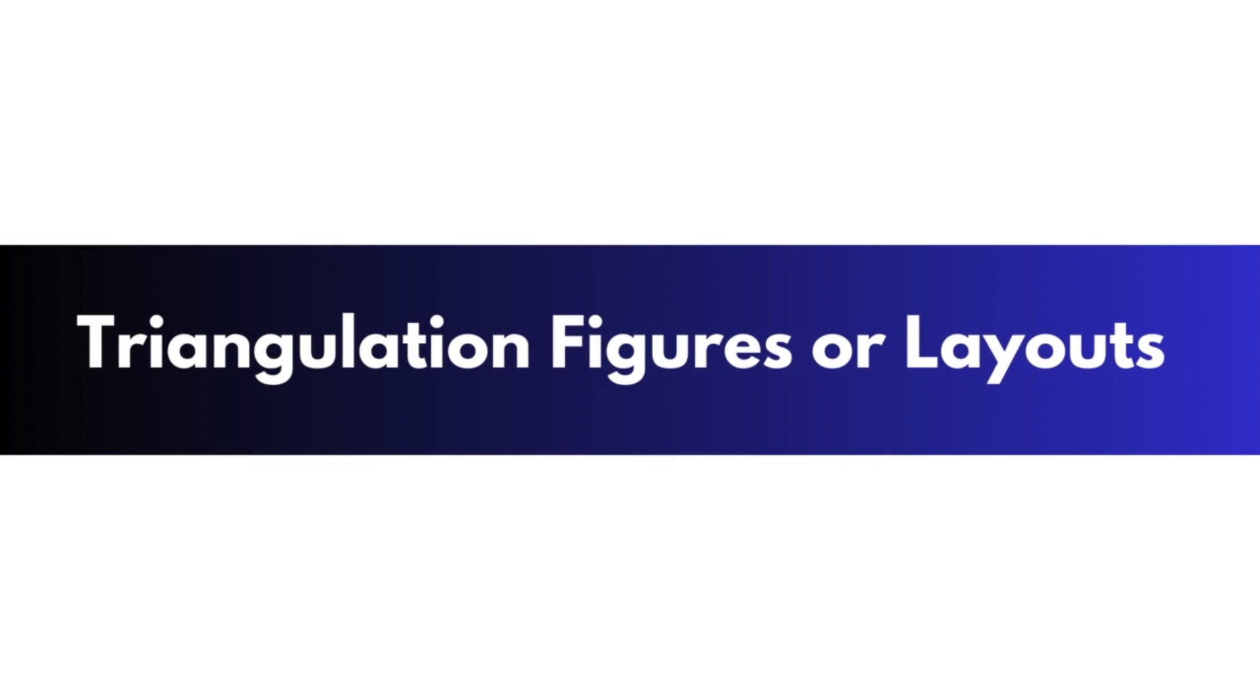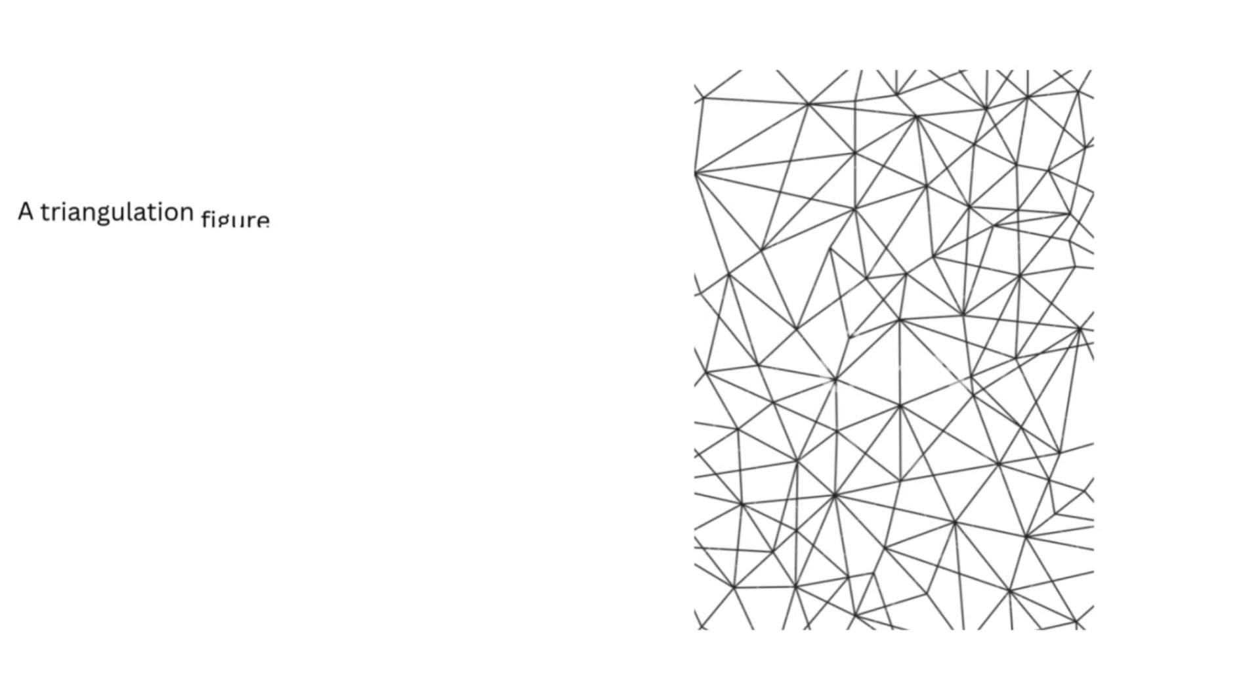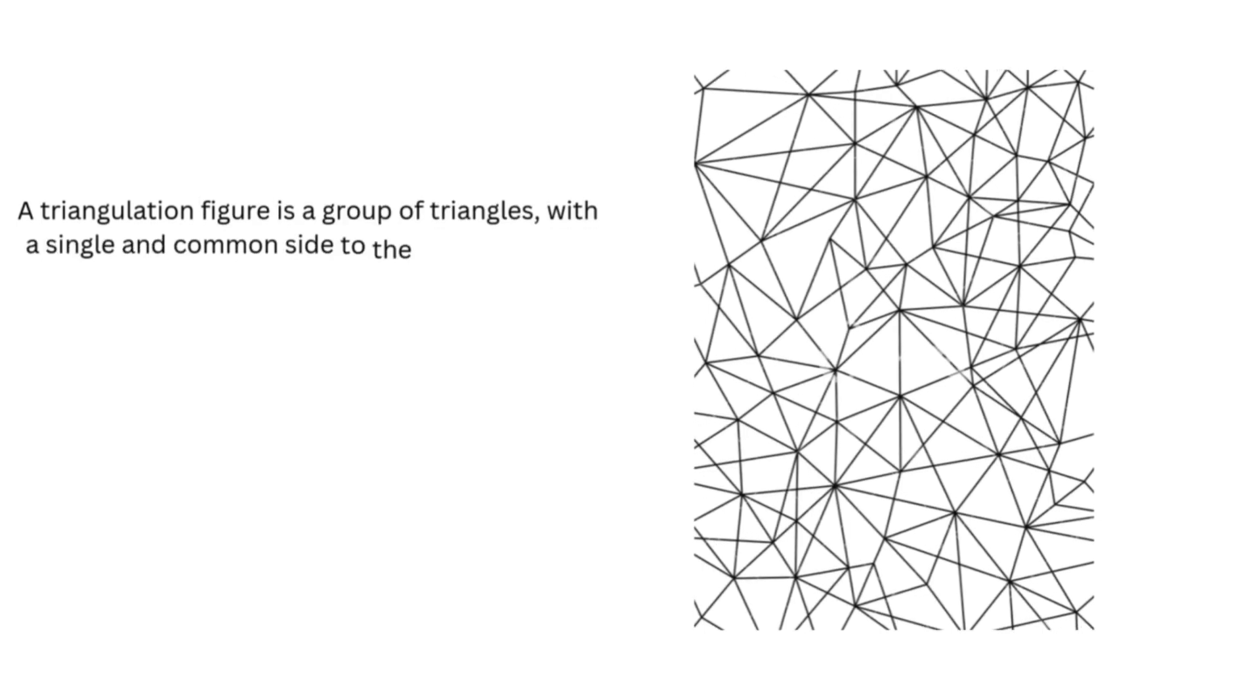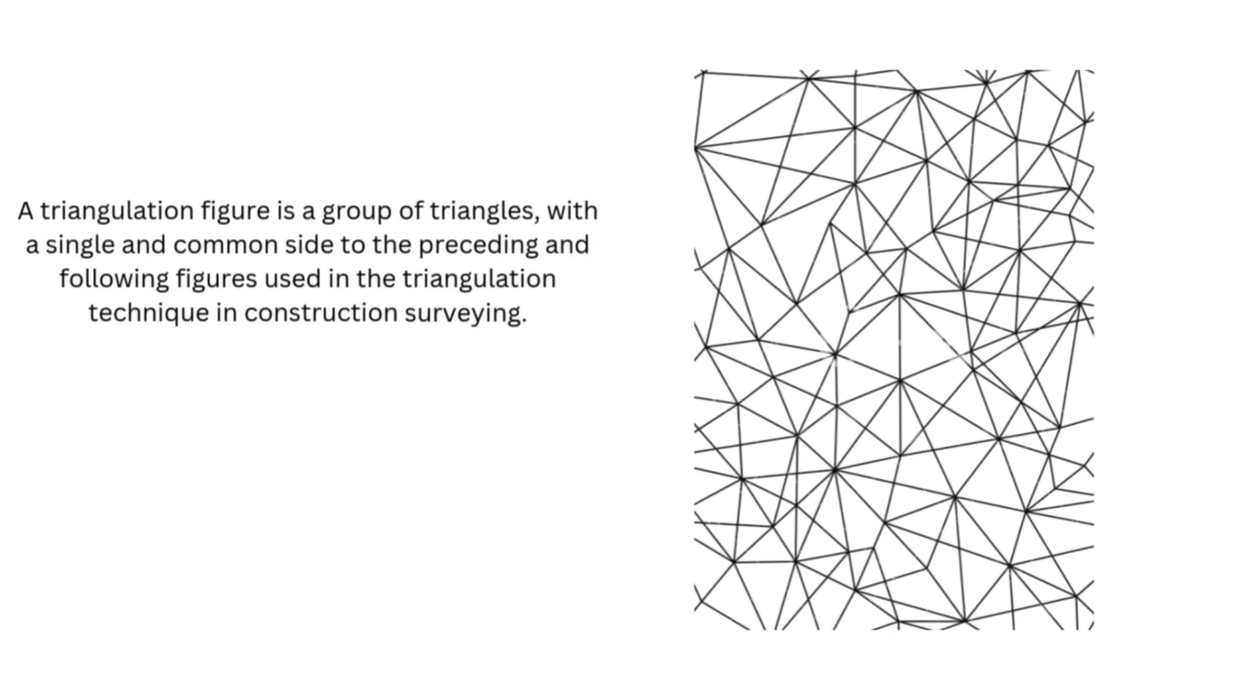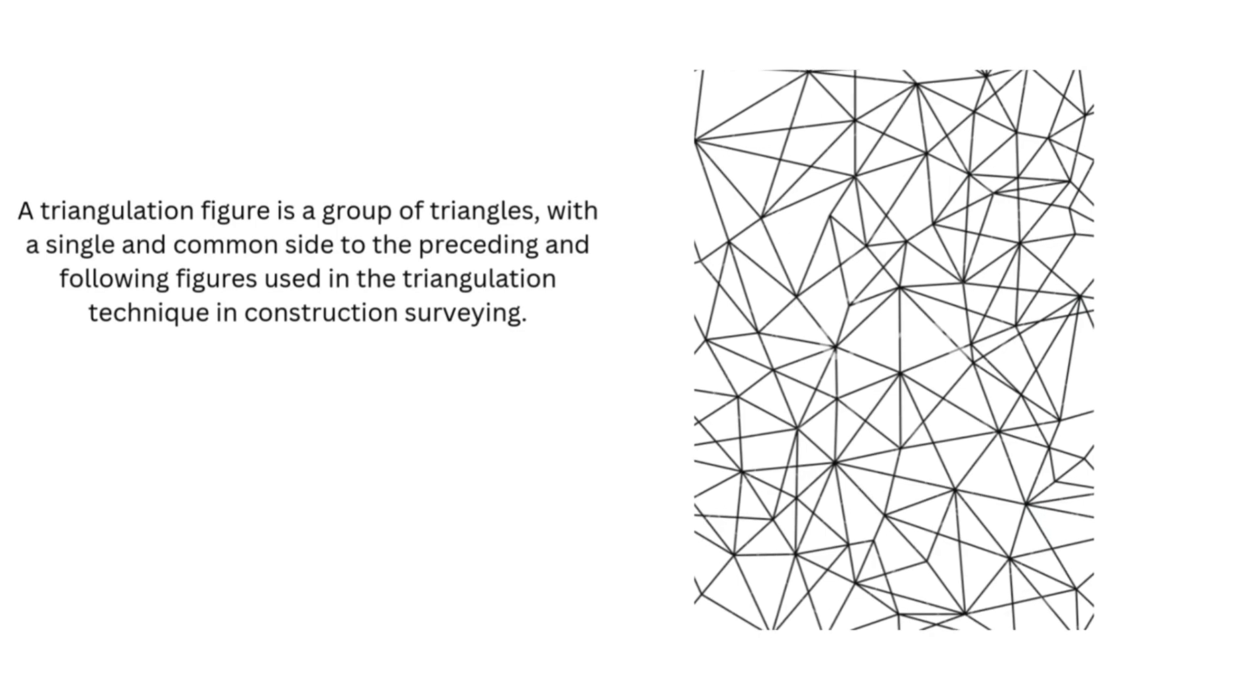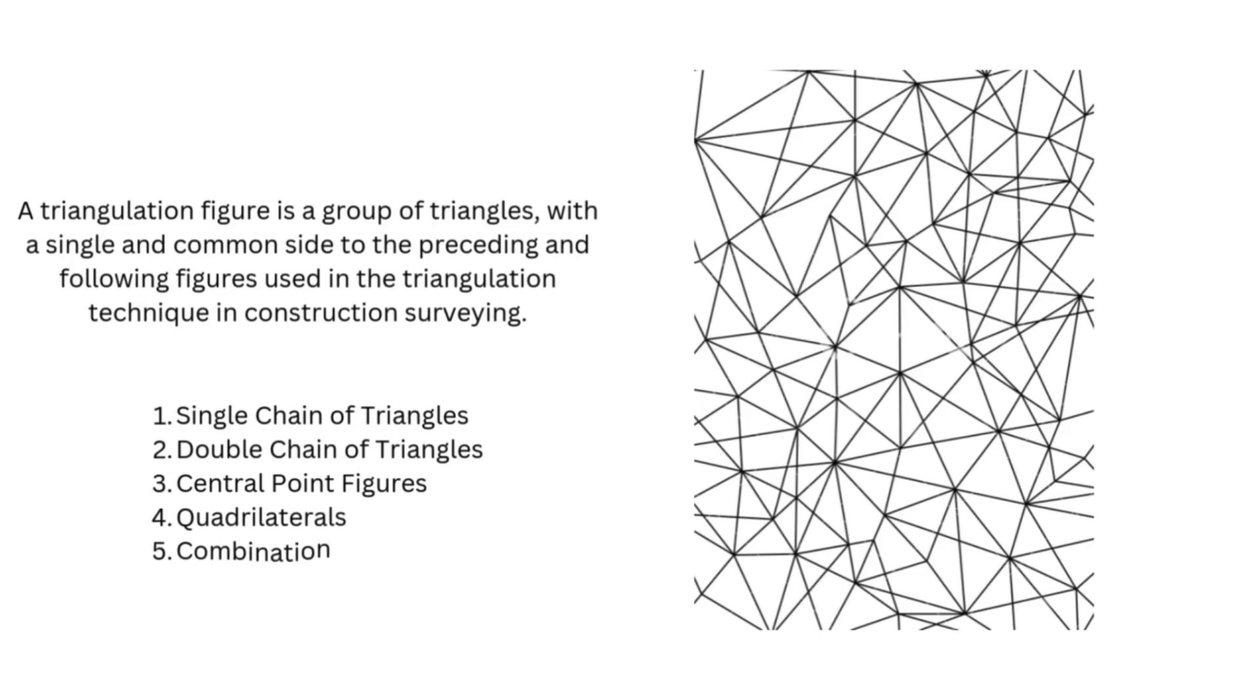Triangulation figures or layouts in triangulation survey. A triangulation figure is a group of triangles with a single and common side to the preceding and following figures used in the triangulation technique in construction surveying. The common figures or systems used in triangulation systems are single chain of triangles, double chain of triangles, central point figures, quadrilaterals, combination of all the system.